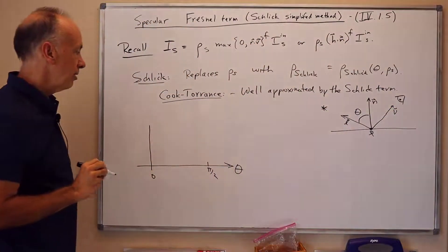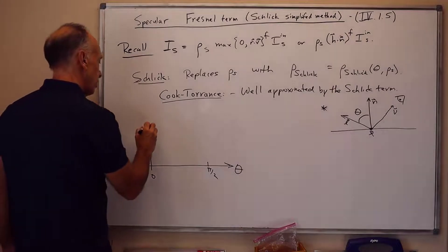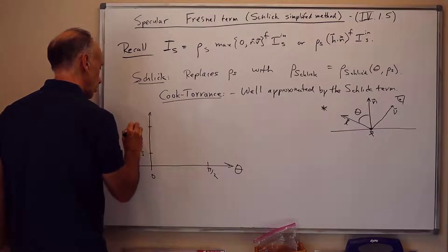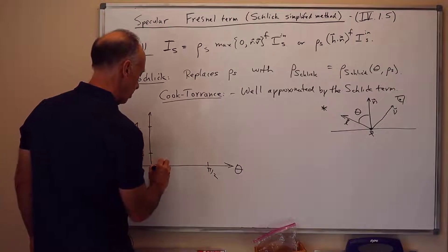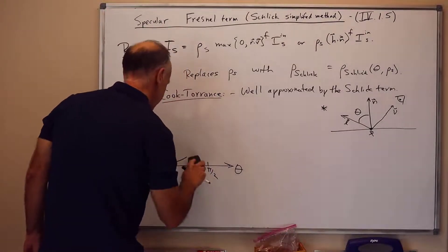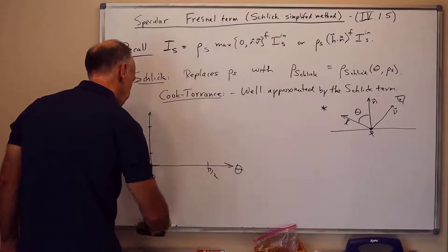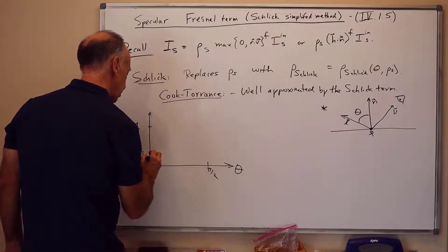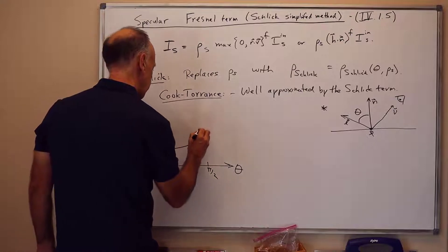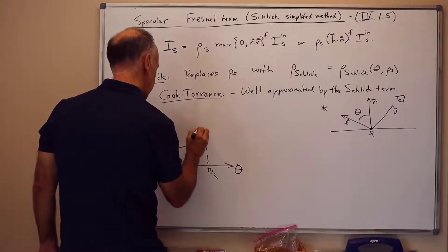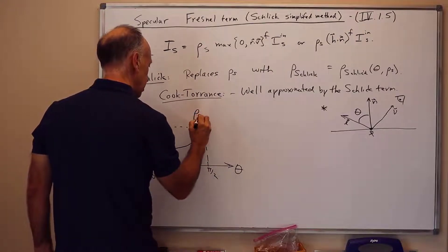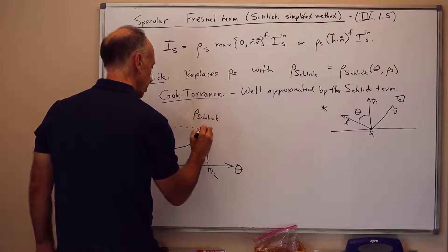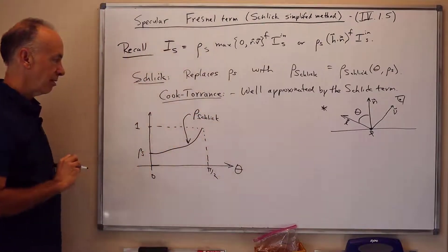but the viewer is some place over here with the unit vector v pointing towards it. Okay, but the position of the viewer doesn't come into the computation. And let me draw on this axis here. I'll draw the value of rho s and the value 1. And then the function rho Schlick looks like the following. When theta is 0, it's rho s.